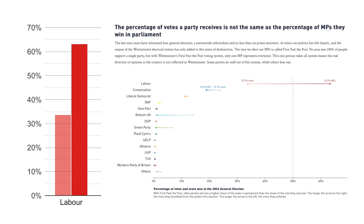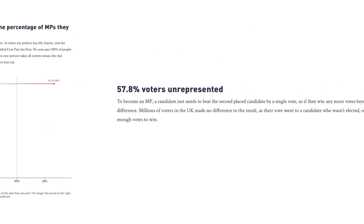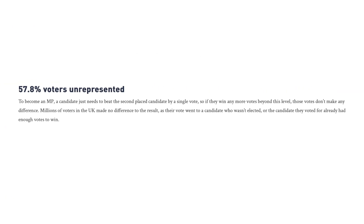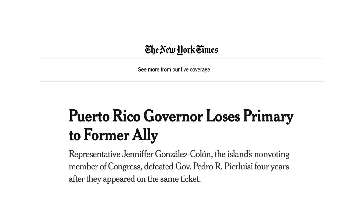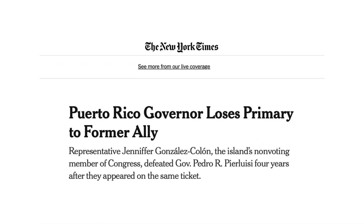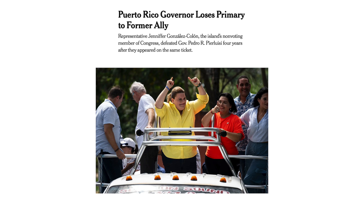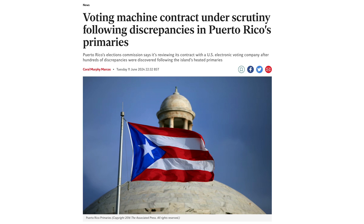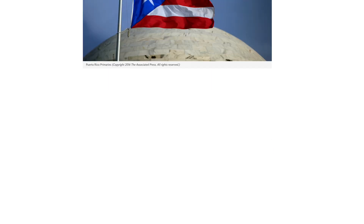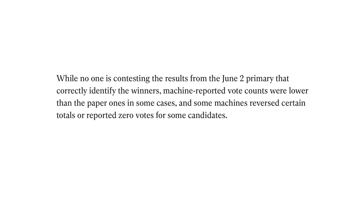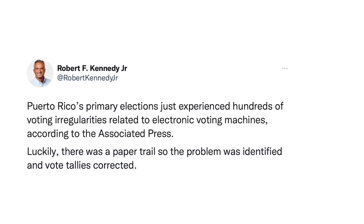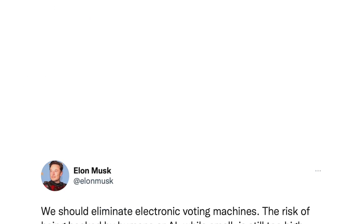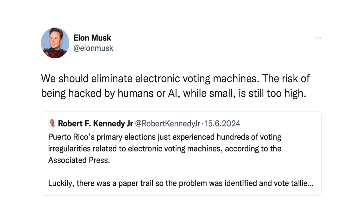This divide is stark. In fact, nearly 60% of the people who voted in this election didn't really make a difference on the results. Across the globe in Puerto Rico, the primary elections saw a shocking result as congressional Jennifer Gonzalez defeated governor Pedro Perluisi amidst controversy regarding the electronic voting machines. The machine-reported vote counts were much lower than the paper ones in some cases, and some machines reversed certain totals or reported zero votes for some candidates. This grabbed global headlines, leading to a tweet by Elon Musk calling for a ban on EVMs in order to have a fair and free election.